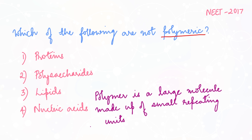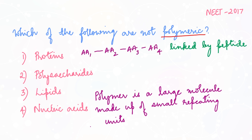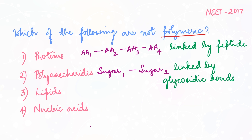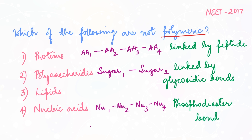Is protein a polymer? Yes, it is a polymer of amino acids. There are about 20 different amino acids linked one after another by a peptide bond to form a long chain. Polysaccharides are also polymers — monosaccharide units linked together by glycosidic bonds. Nucleic acids are also polymers — they are polymers of nucleotides linked together by phosphodiester bonds. So your answer is option 3: lipids.